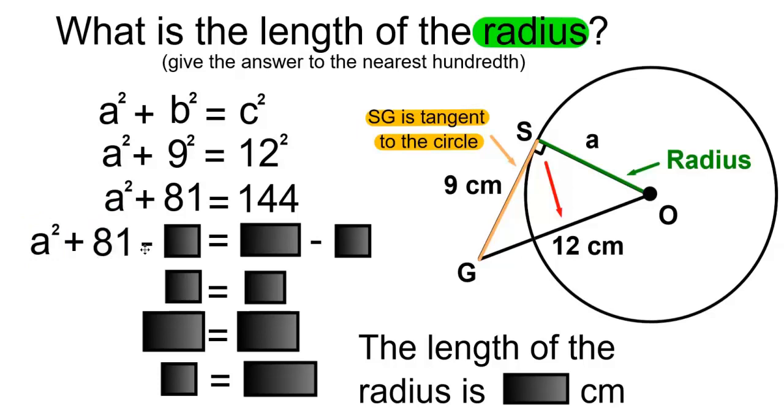To remove the 81 from this side, we'll have to subtract 81. If we subtract 81 from that side, we have to subtract 81 from the other side as well. The plus 81 and minus 81 will cancel each other out, leaving us with A squared. And 144 minus 81 will give us 63.